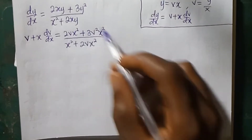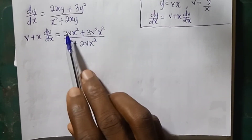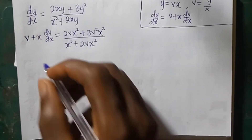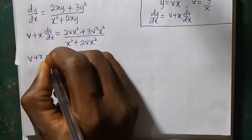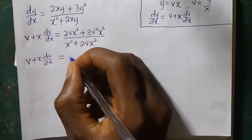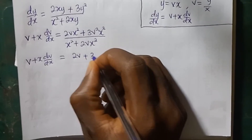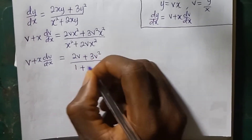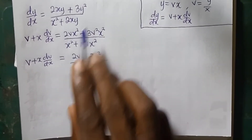If you look at these terms, all of them contain x squared. So we are going to divide each term by x squared in order to eliminate x squared. From the left-hand side, we have v plus x dv over dx. And on the right-hand side, we have 2v plus 3v squared divided by 1 plus 2v, because we have divided each term by x squared.